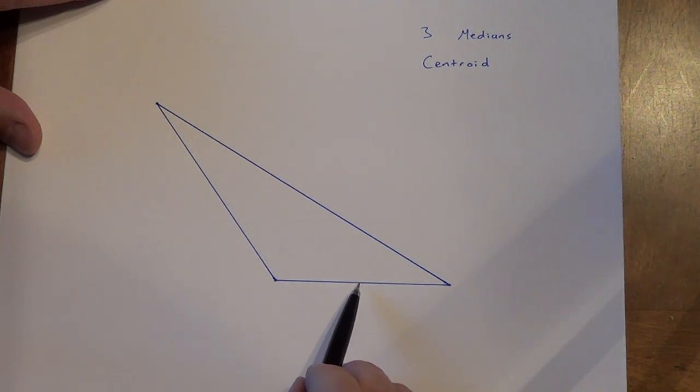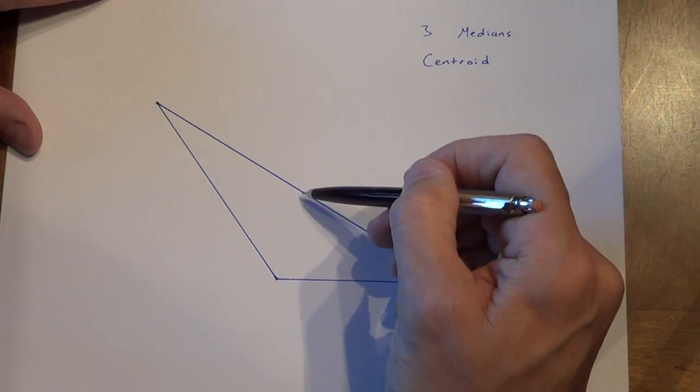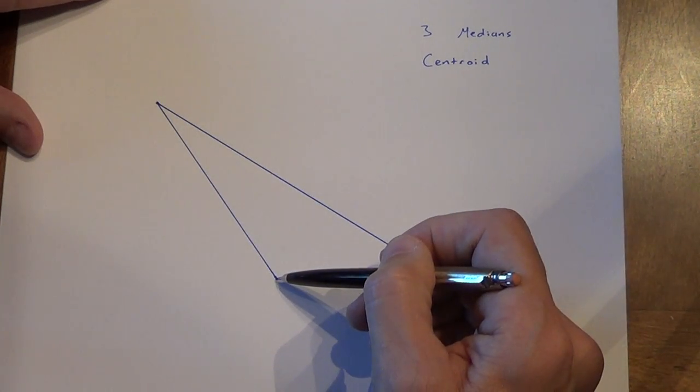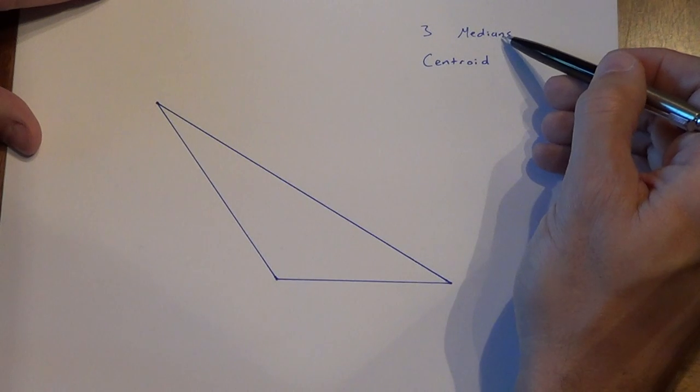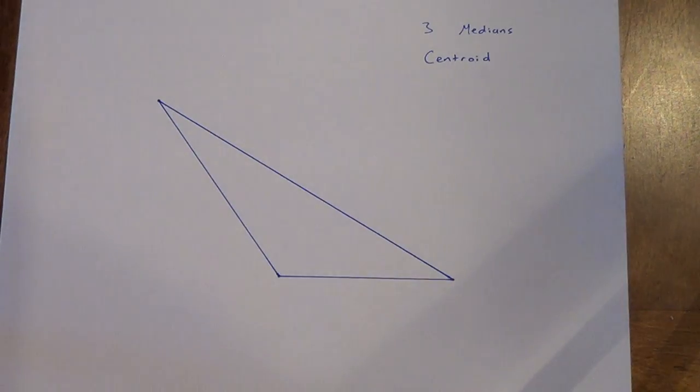It's going to start at this midpoint down here, and it's going to go to the opposite vertex up here. It can start at this midpoint here and travel to this opposite vertex here. It's a median. It's a segment that starts at the midpoint of one side of a triangle, and it travels to the opposite vertex.